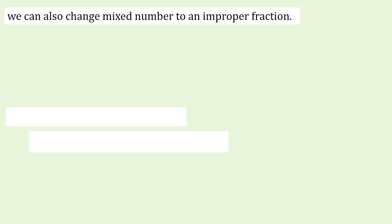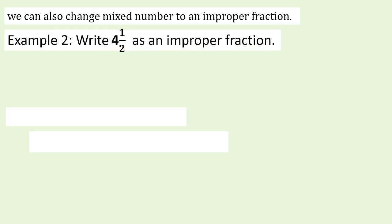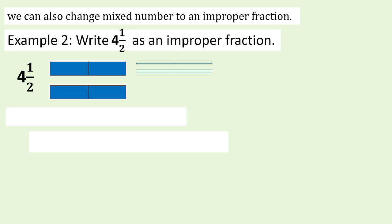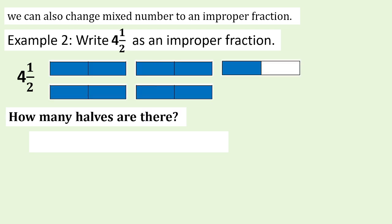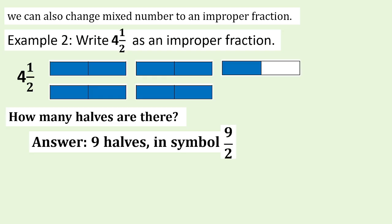We can also change a mixed number to an improper fraction. Example 2: Write 4 and one-half as an improper fraction. How many halves are there? Answer: 9 halves, written as 9 over 2.